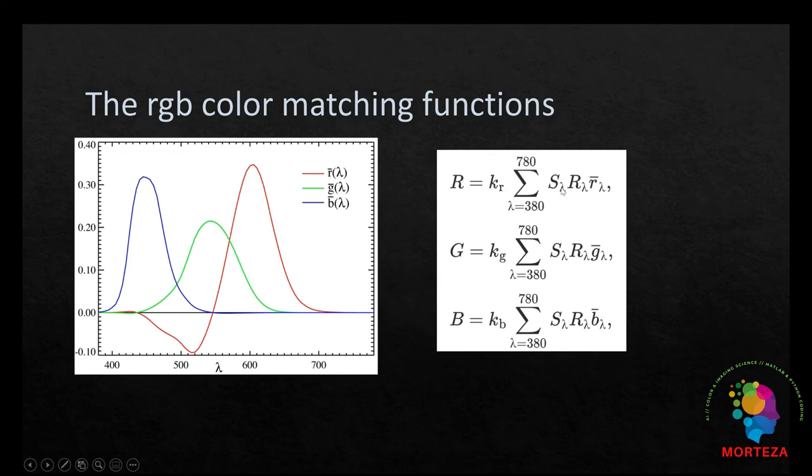Where S is the spectral power distribution of light source, and R is the reflectance, and RGB are the color matching functions.